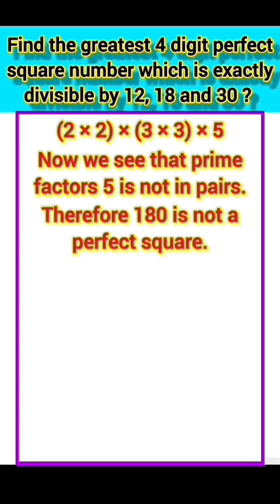In order to get a perfect square, each factor of 180 must be paired. So we need to make a pair of 5. Therefore 180 should be multiplied by 5. That is 180 × 5 equals 900, which is the greatest 3-digit perfect square number.